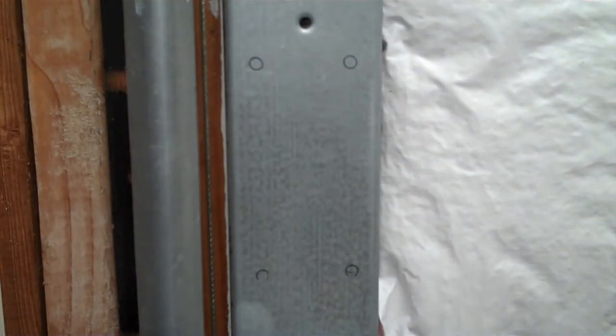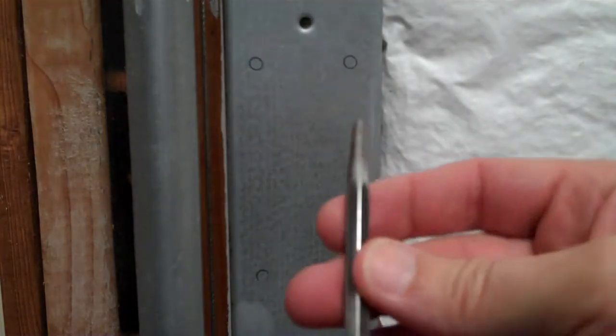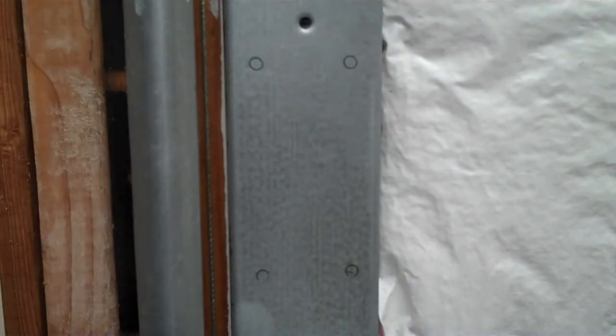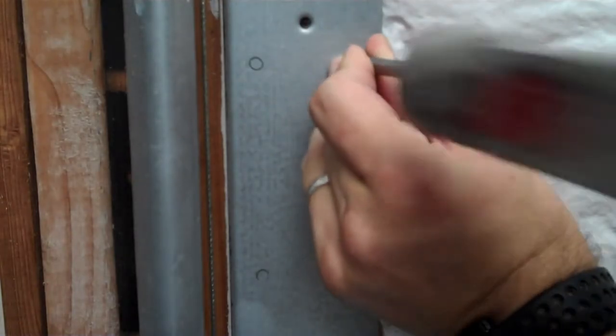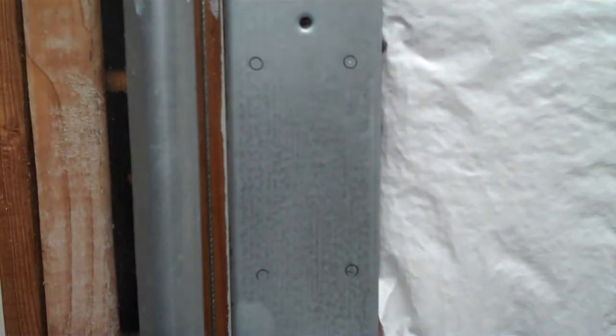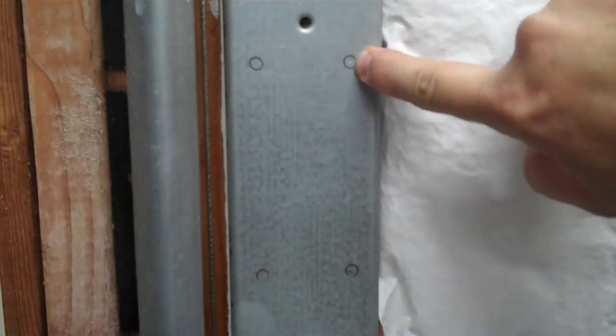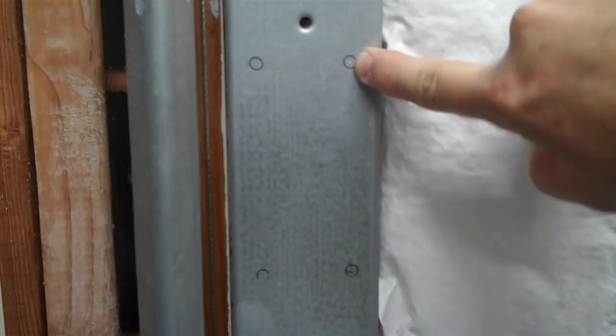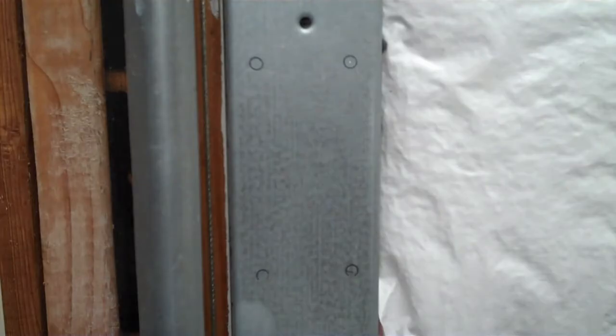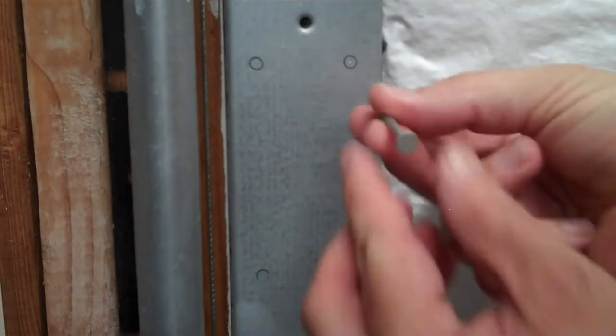And then you use a punch to hit into the center of each of these holes. You want to make a good divot in there so that you can use that to guide your drill, or in this case, the end of the self-drilling screw. Now if you don't have a punch, a nail works fine.